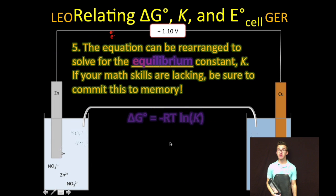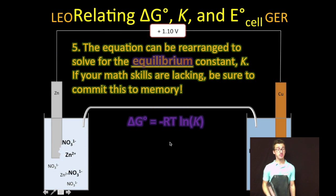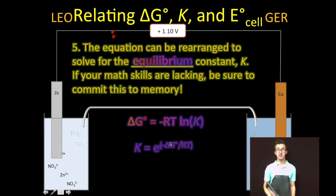It's important to note you can rearrange the equation to solve for the equilibrium constant. This is a common question that you'll find on the AP exam. Not so much on the multiple choice, but definitely on the free response. And if your math skills are lacking, be sure to commit that second equation to memory because the second one is not on the formula chart.